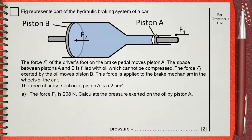The figure represents part of the hydraulic braking system of a car. The force F1 of the driver's foot on the brake pedal moves piston A. The space between piston A and B is filled with oil, which cannot be compressed. The force F2 exerted by the oil moves piston B, and this force is applied to the brake mechanism in the wheels of the car.